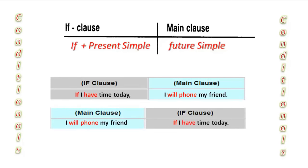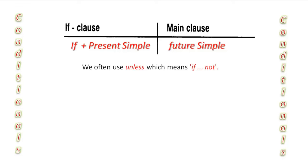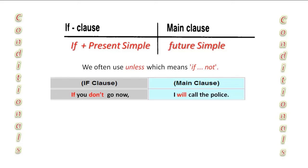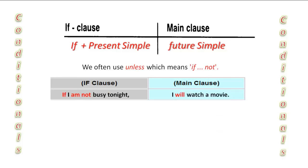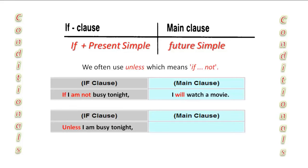We can use unless instead of if not. If you don't go now, I will call the police. If I want to put unless instead of if not, I remove the if and not and replace if with unless. Unless you go now, I will call the police. If I am not busy tonight, I will watch a movie. Unless I am busy tonight, I will watch a movie.